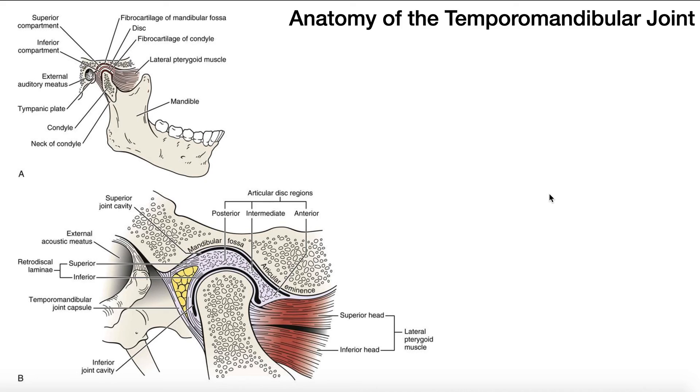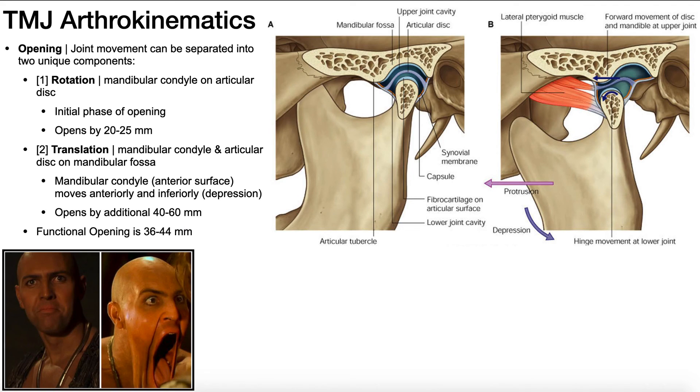So hopefully this video gave you a good understanding of the important anatomy of the temporomandibular joint. Join us in the next video when we start talking about the arthrokinematic movements of the TMJ, in particular doing opening and closing. After that, we'll go into more of the muscles, the specific muscles involved.